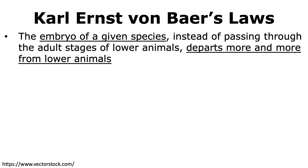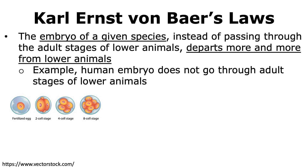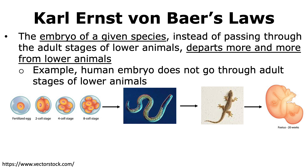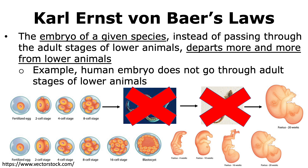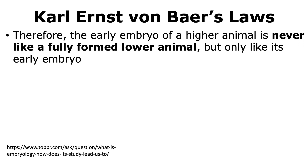The third law states that the embryo of a given species, instead of passing through the adult stages of lower animals, departs more and more from lower animals. Let us take the example of human development. Here we're looking at a fertilized egg that is undergoing mitotic divisions, and based on Karl Ernst von Baer's law, what it states is that this developing embryo is not going to become a worm and then a lizard and then finally a human — that is simply not how it works.